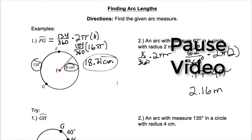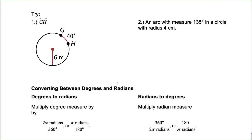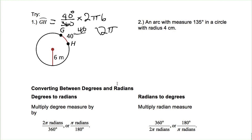Go ahead and pause the video and give that next one a try. For GH: arc length = 40/360 × 2π × 6. Note that's not an equals sign — we're multiplying. The full circumference would be 12π, but we only want the 40/360 portion. 40 ÷ 360 ≈ 0.1̄, times 12π gives approximately 4.19 meters.